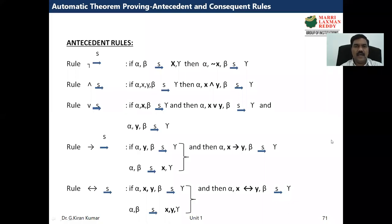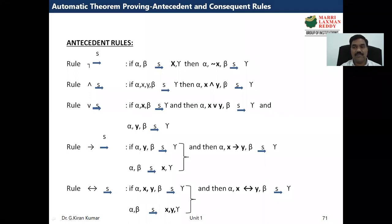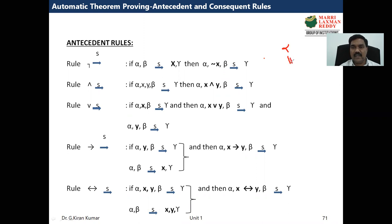Let us discuss antecedent and consequent rules. These are rules specifically for automatic theorem proving and will not be applicable for earlier methods. Recalling from the last video, all axioms are theorems. If alpha is a theorem and beta is derived from alpha by applying one of the five antecedent rules or five consequent rules, then beta is also called a theorem.